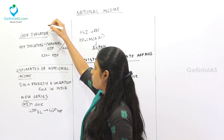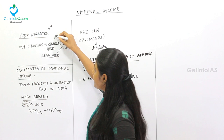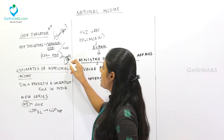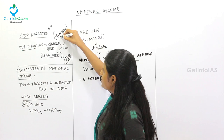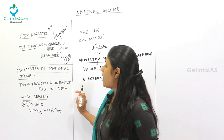The GDP deflator is nominal GDP divided by real GDP multiplied by 100. Nominal GDP is the current year's GDP, while real GDP refers to the base year's GDP — currently 2011-12. The GDP deflator shows how much the GDP has deflated or changed in value.